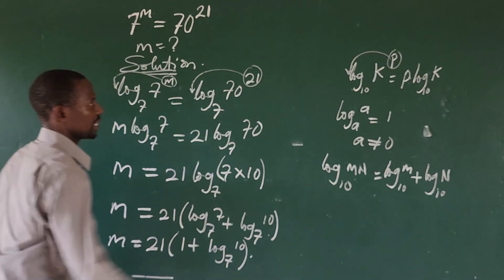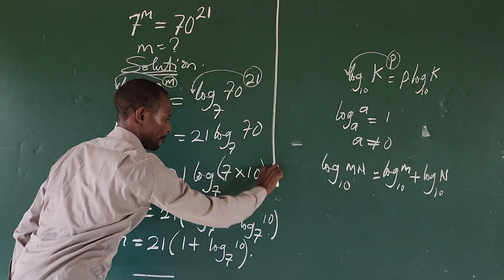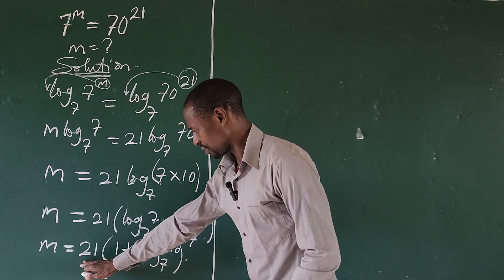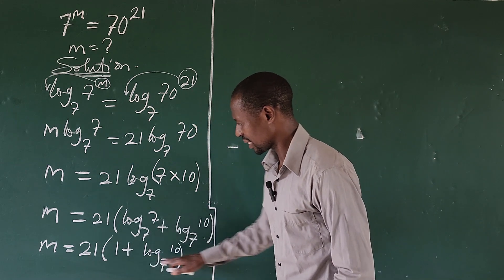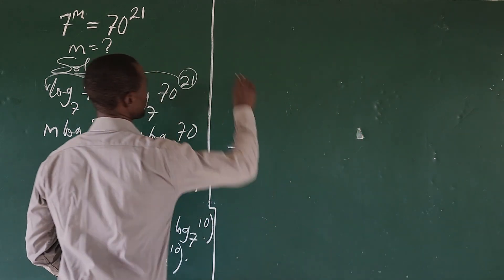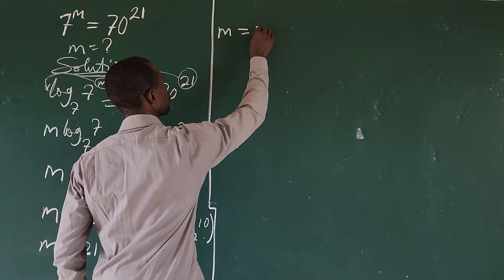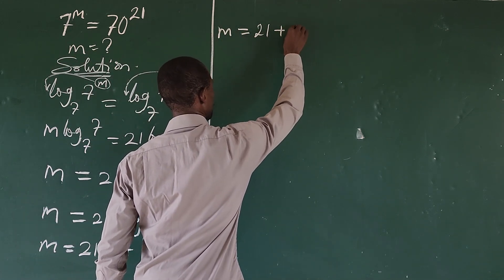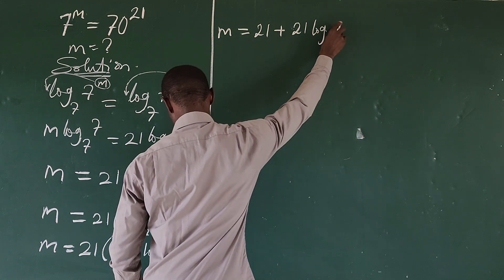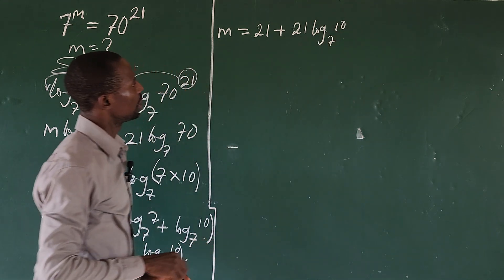At this point, I can use 21 to expand everything. So this gives us m equals 21 plus 21 times log base 7 of 10.